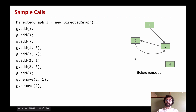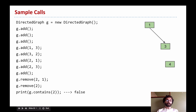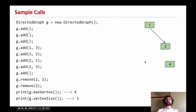We could also remove entire vertices. In that case, all the edges are removed and then the vertex is removed. We do not renumber our vertices, so there's a hole in the set — vertices 1, 3, and 4 remain after removing 2. We can ask whether the graph contains 2 — it should return false. The max numbered vertex is 4, and the vertex count should only be 3.